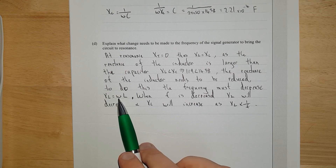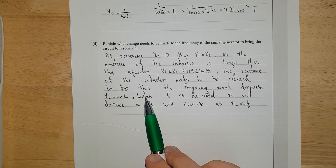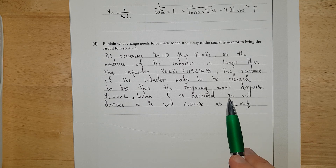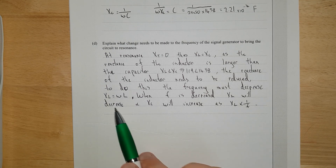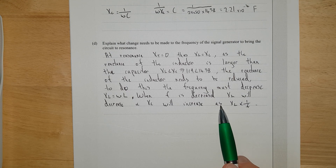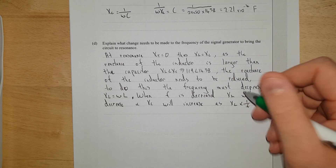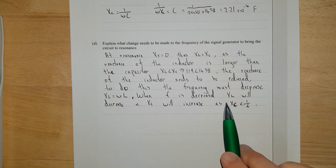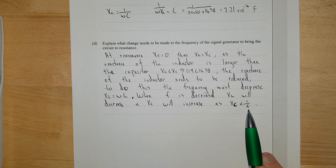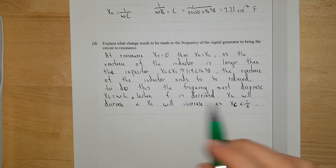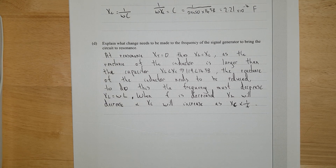XL equals omega L, so when the frequency is decreased, XL will decrease, and XC will increase — bringing the circuit toward resonance.